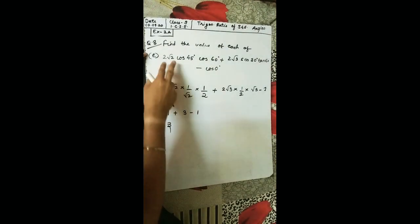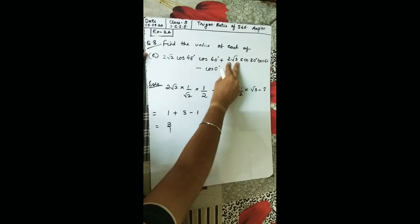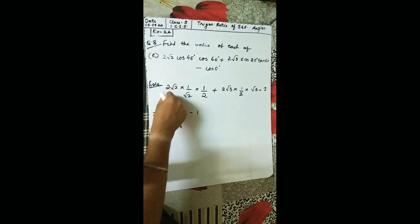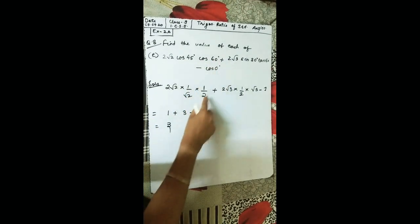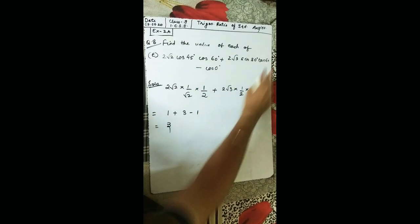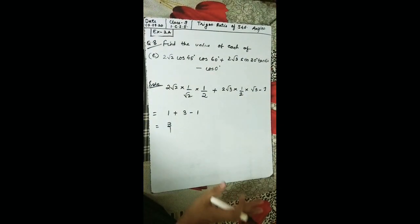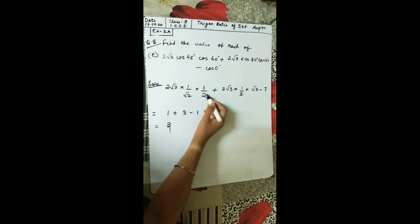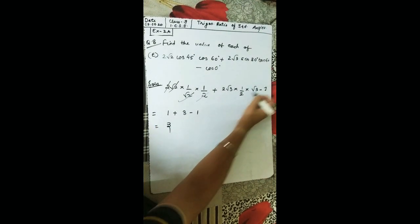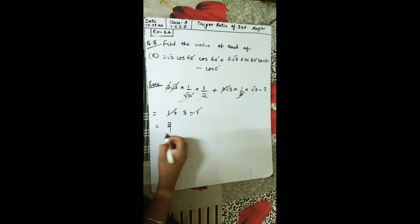Question 5: 2√2·cos 45°·cos 60° + 2√3·sin 30°·tan 60° − cos 0°. Substituting: 2√2·(1/√2)·(1/2) + 2√3·(1/2)·√3 − 1. The √2 cancels with √2, leaving 1. Then 2√3·(1/2)·√3 = 3. So 1 + 3 − 1 = 3.